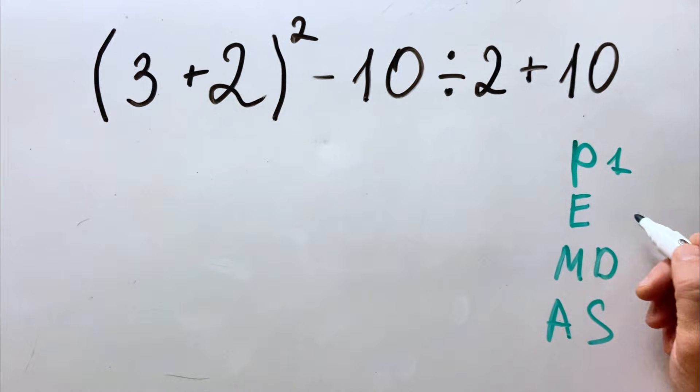E stands for exponents. We have exponents here. We do it second after figuring out what's inside the parentheses.